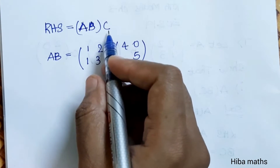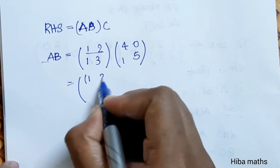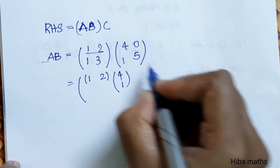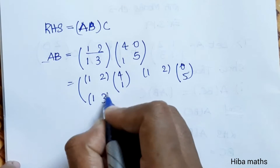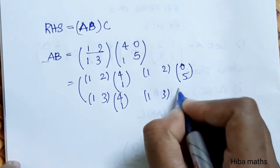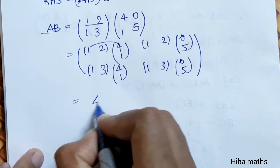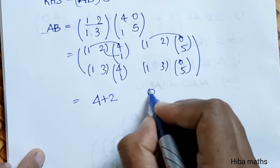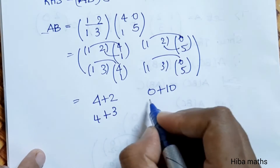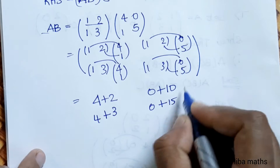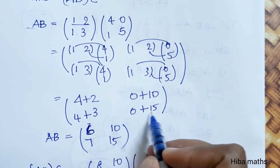For RHS, first compute AB. A = [1,2; 1,3] and B = [4,0; 1,5]. Row-column method: first row first column: 1×4 + 2×1 = 6; first row second column: 1×0 + 2×5 = 10; second row first column: 1×4 + 3×1 = 7; second row second column: 1×0 + 3×5 = 15. So AB = [6,10; 7,15].